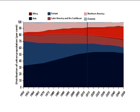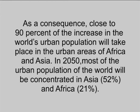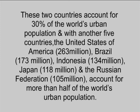As a consequence, close to 90% of the increase in the world's urban population will take place in the urban areas of Africa and Asia. In 2050, most of the urban population of the world will be concentrated in Asia — 52% — and Africa — 21%. Asia will continue to host nearly one half of the world's urban population. China has the largest urban population — 758 million — followed by India with 410 million. These two countries account for 30% of the world's urban population.